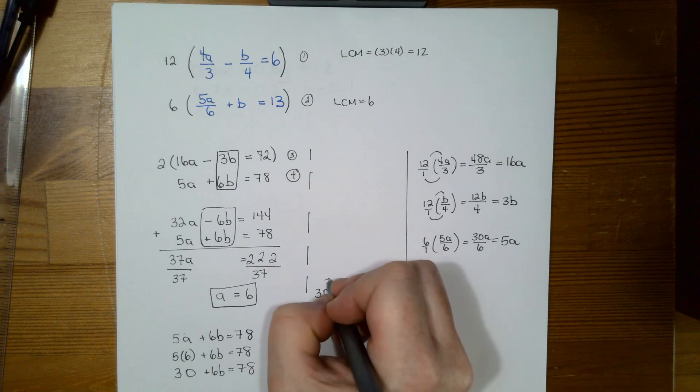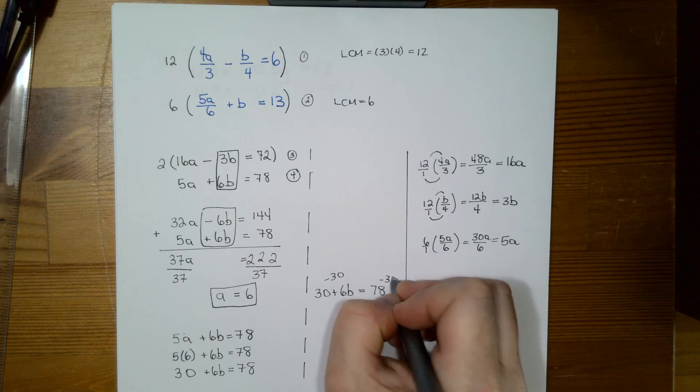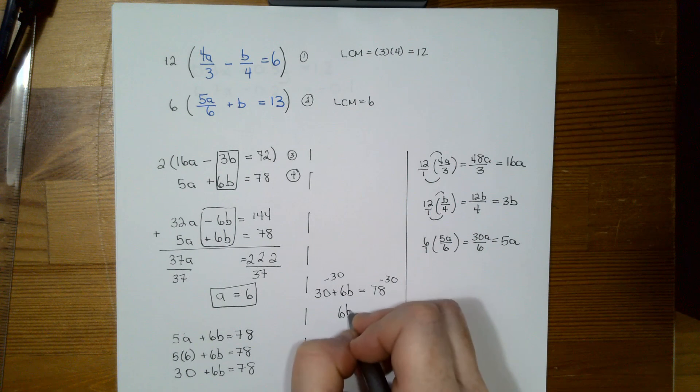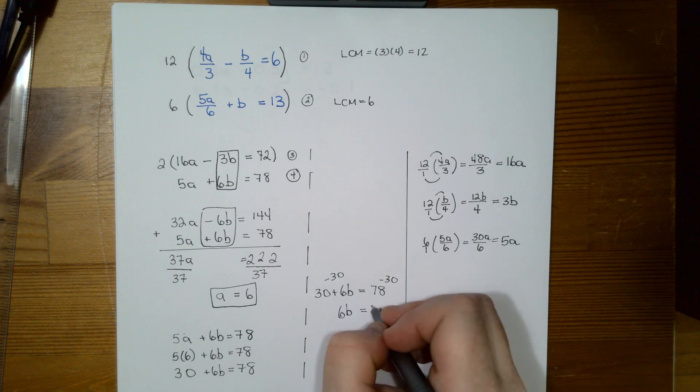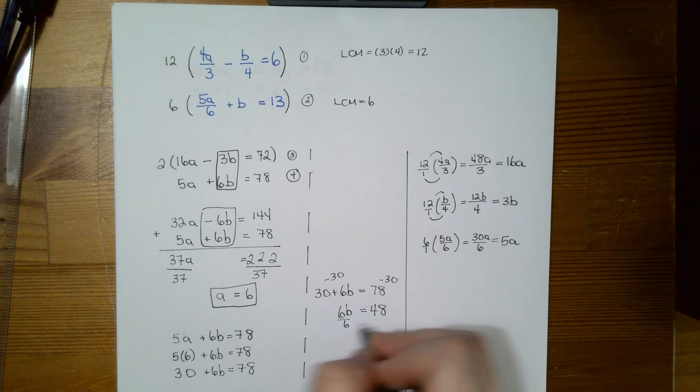So now I want to subtract 30 from both sides. So now I have 6b equals 48. Then I need to divide both sides by 6. And I have b equals 8.